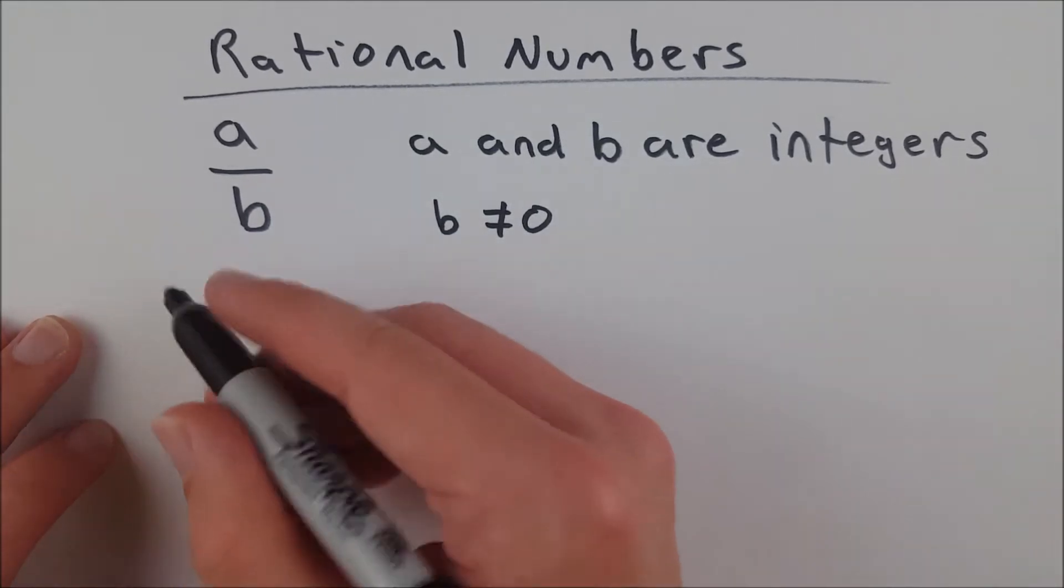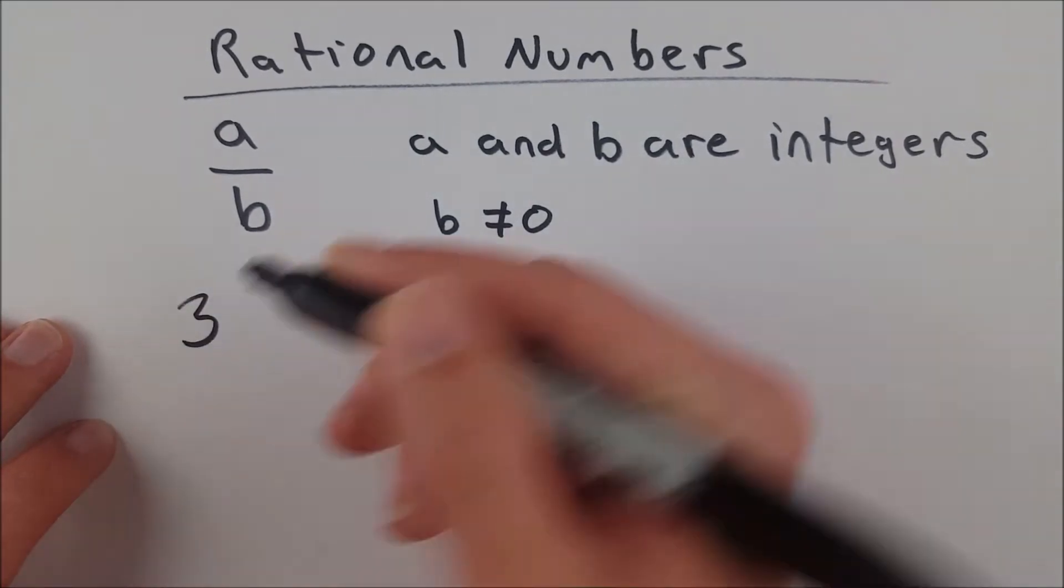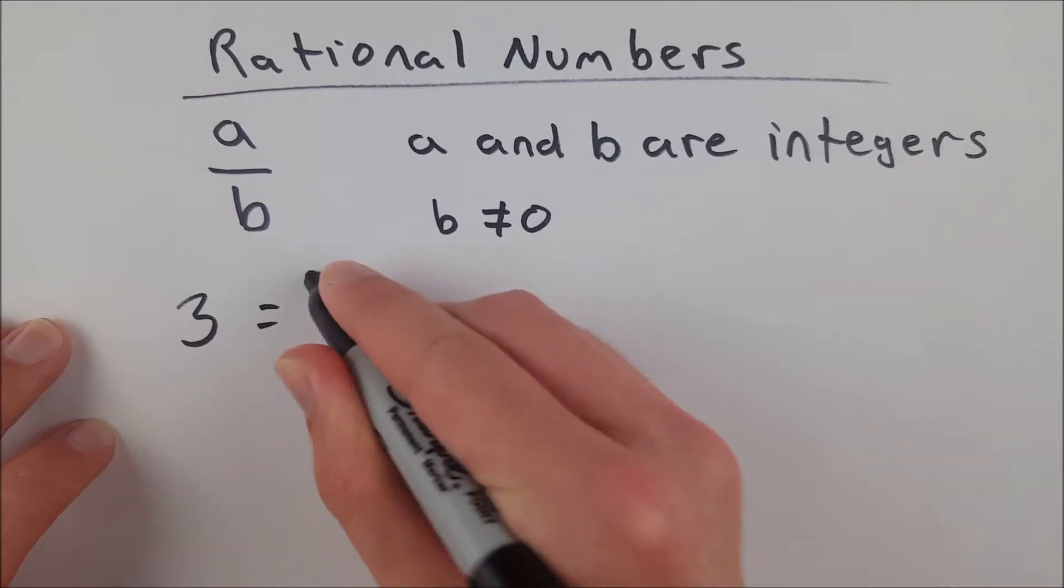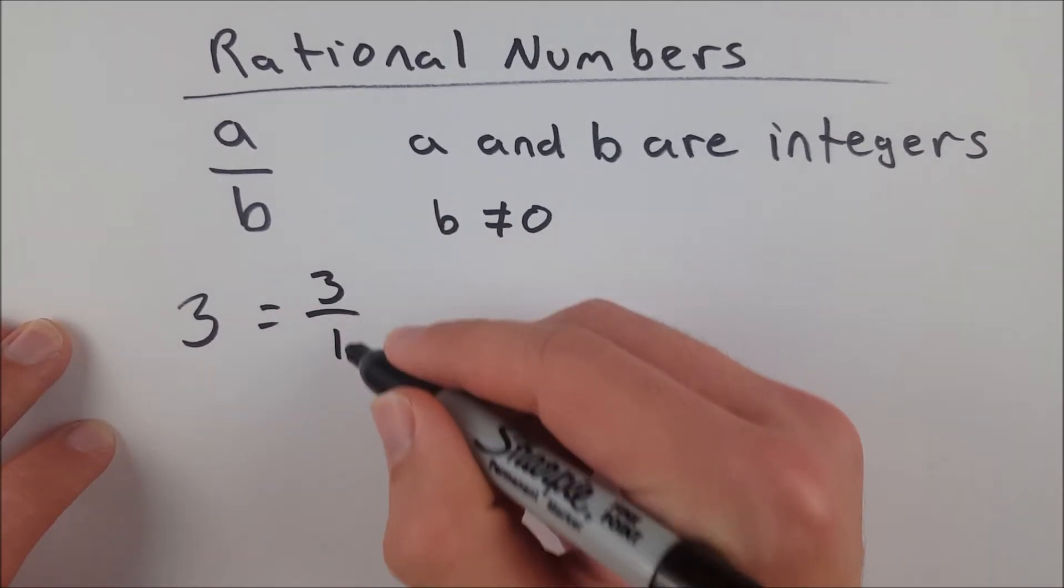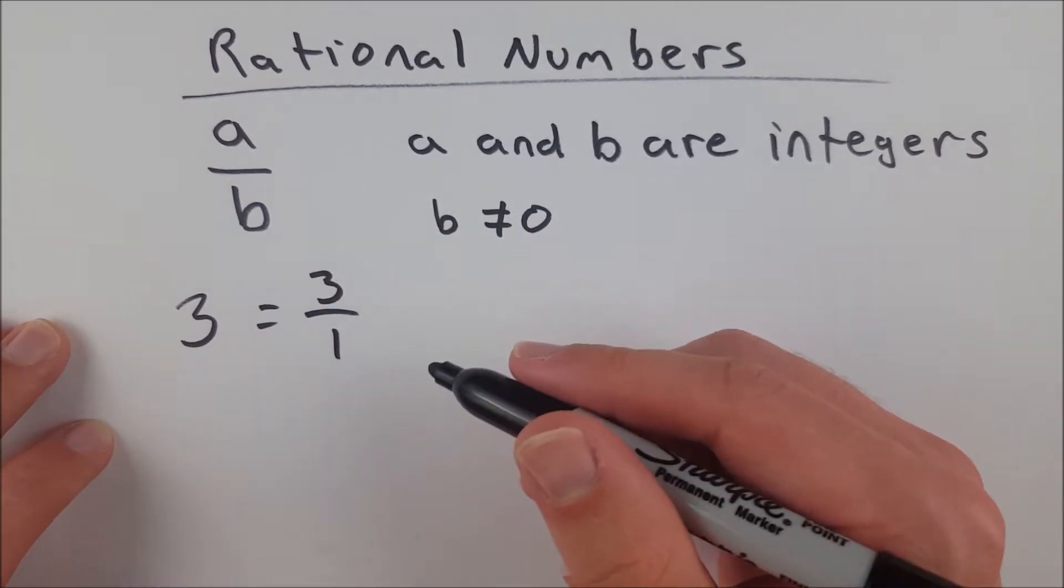So examples of rational numbers are something like, say, 3, for example, which can be written as 3 over 1. 3 and 1 are both integers. 1 is not equal to 0.